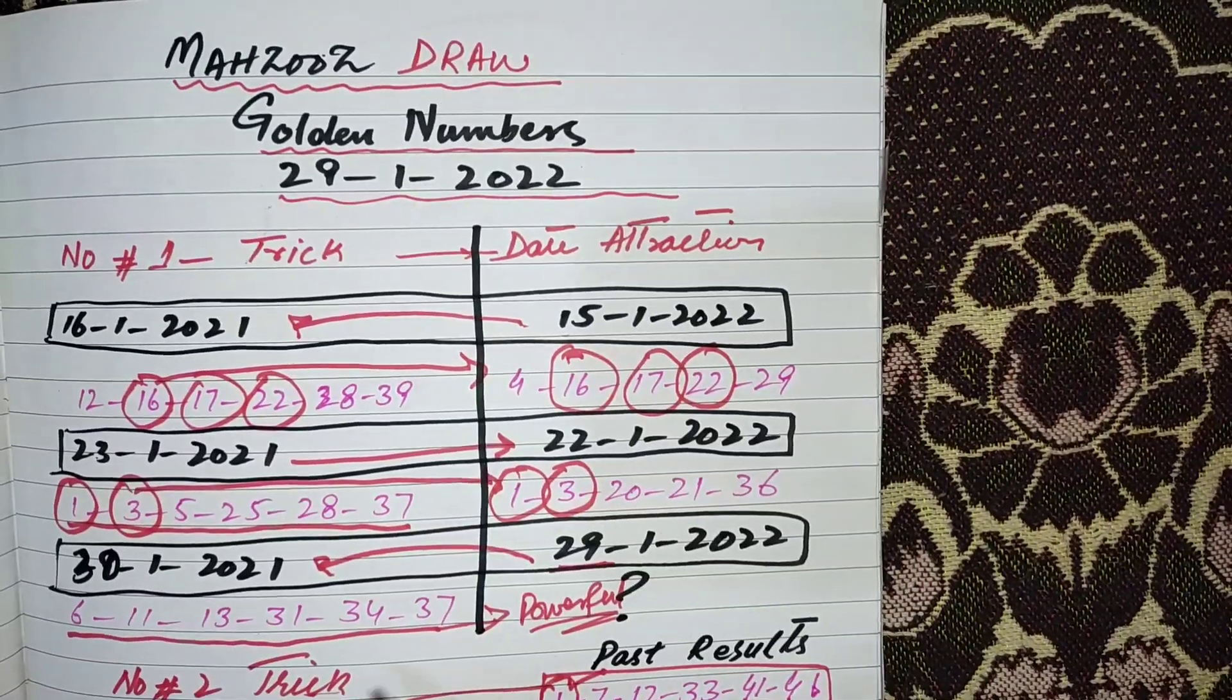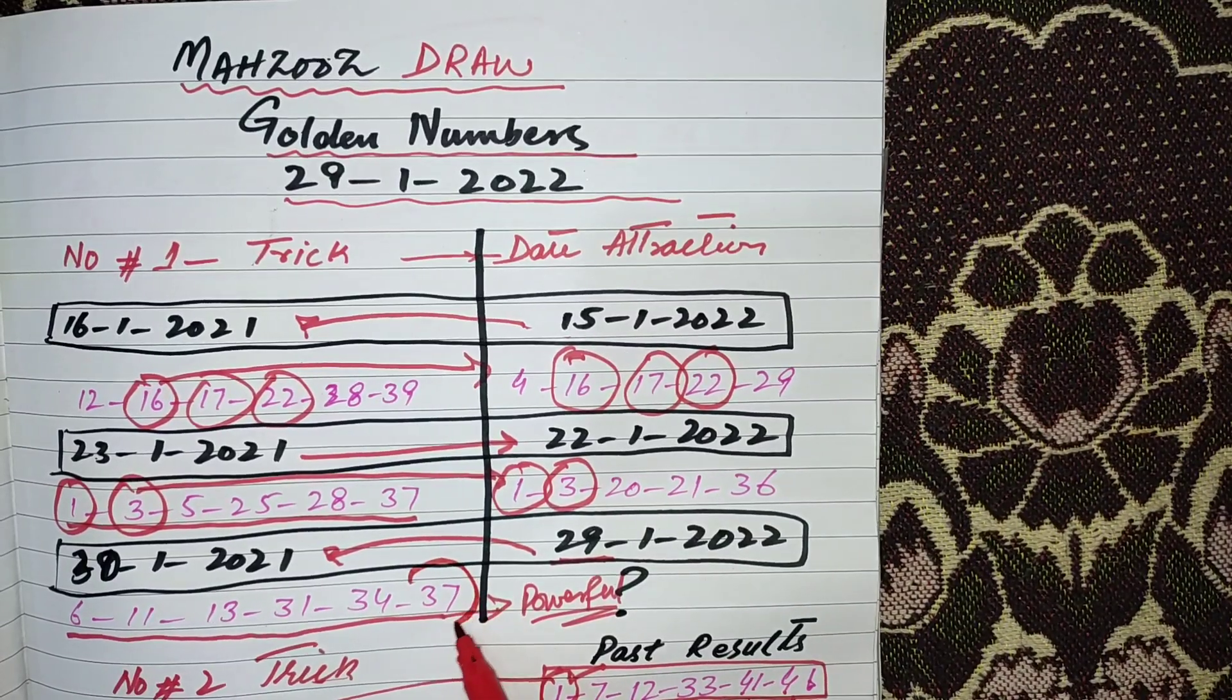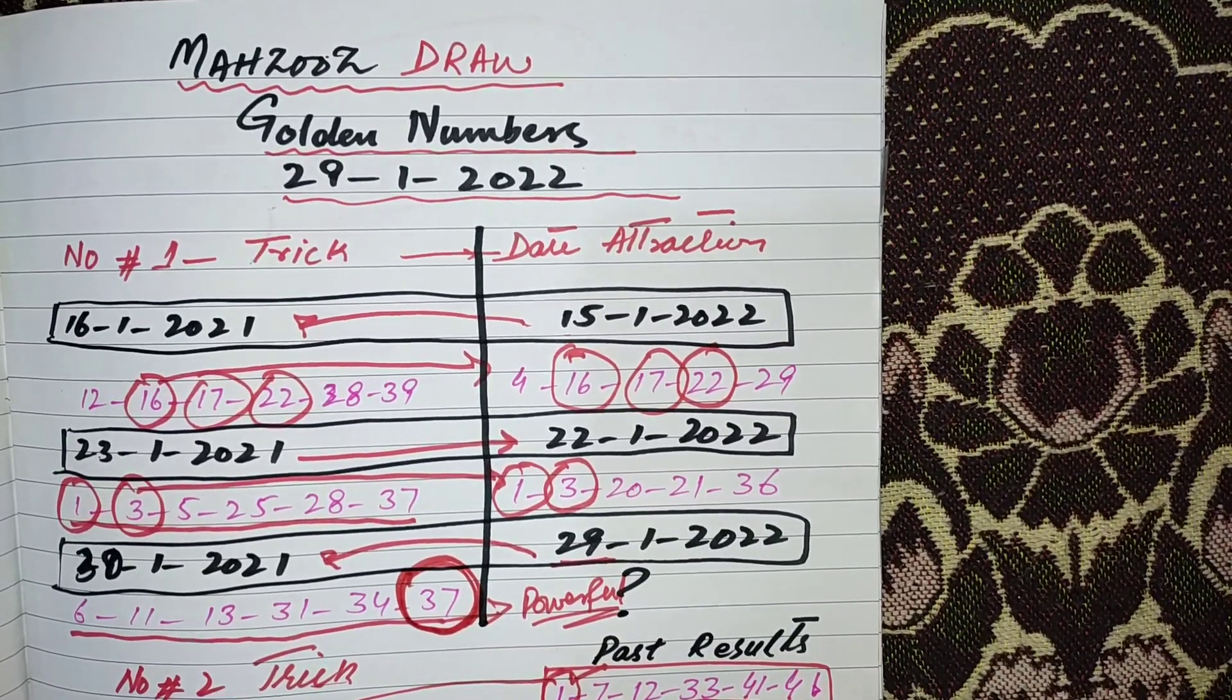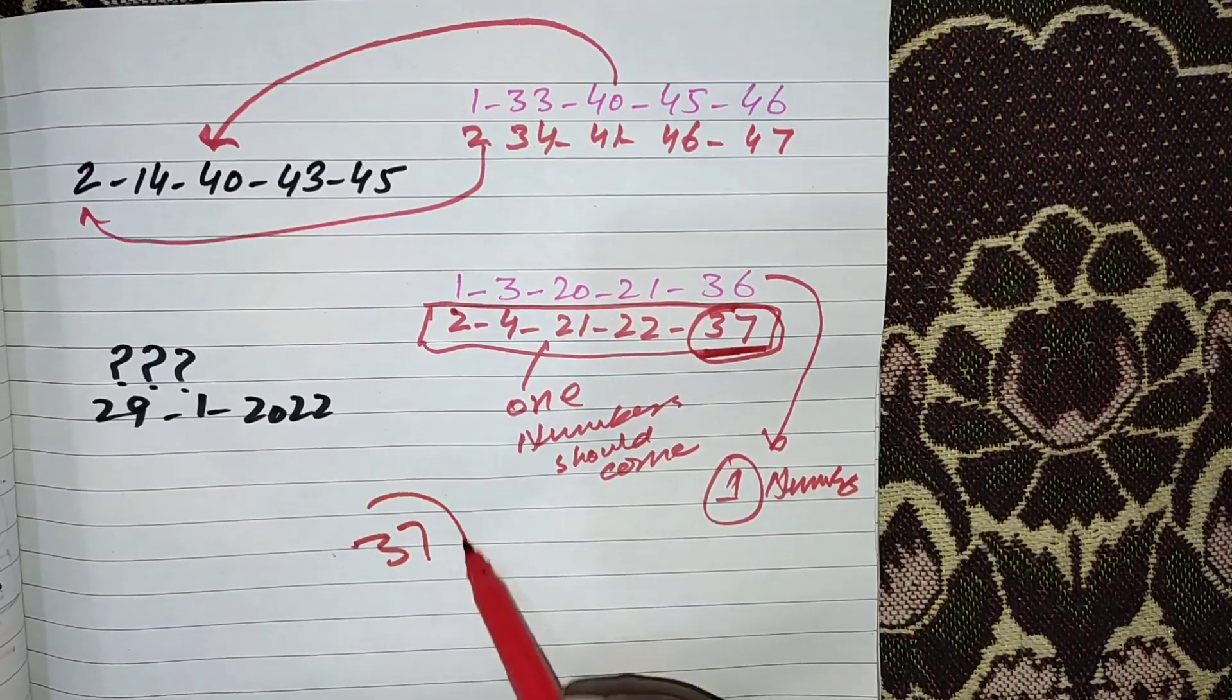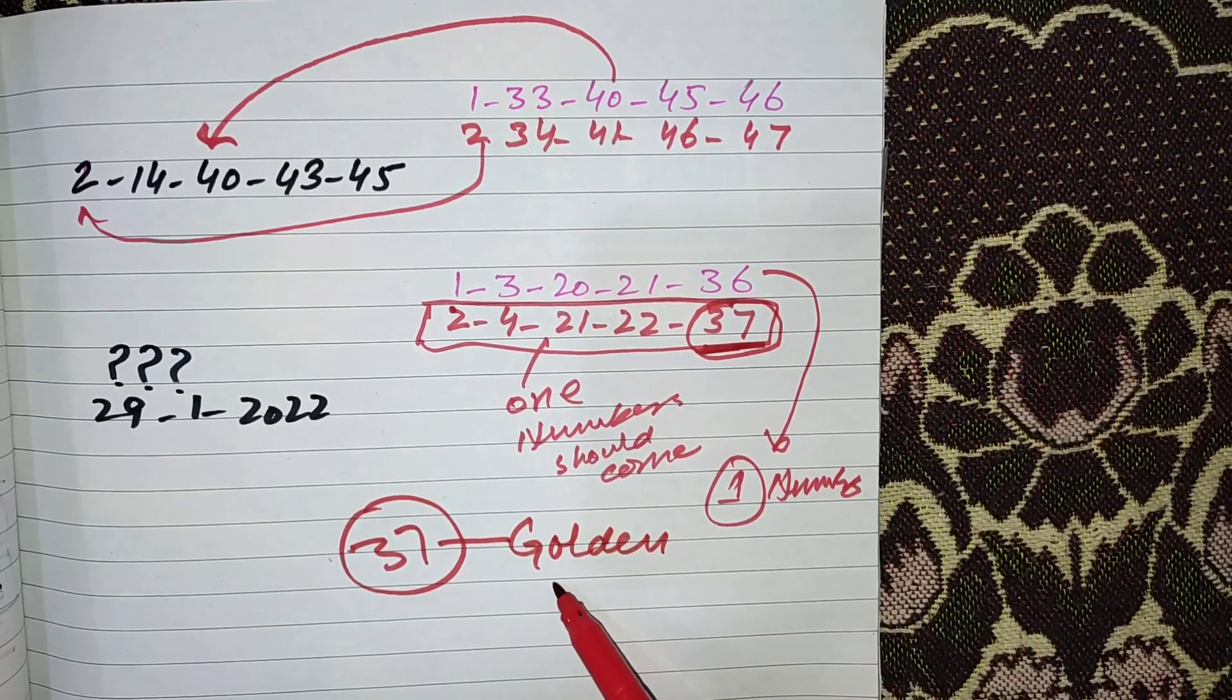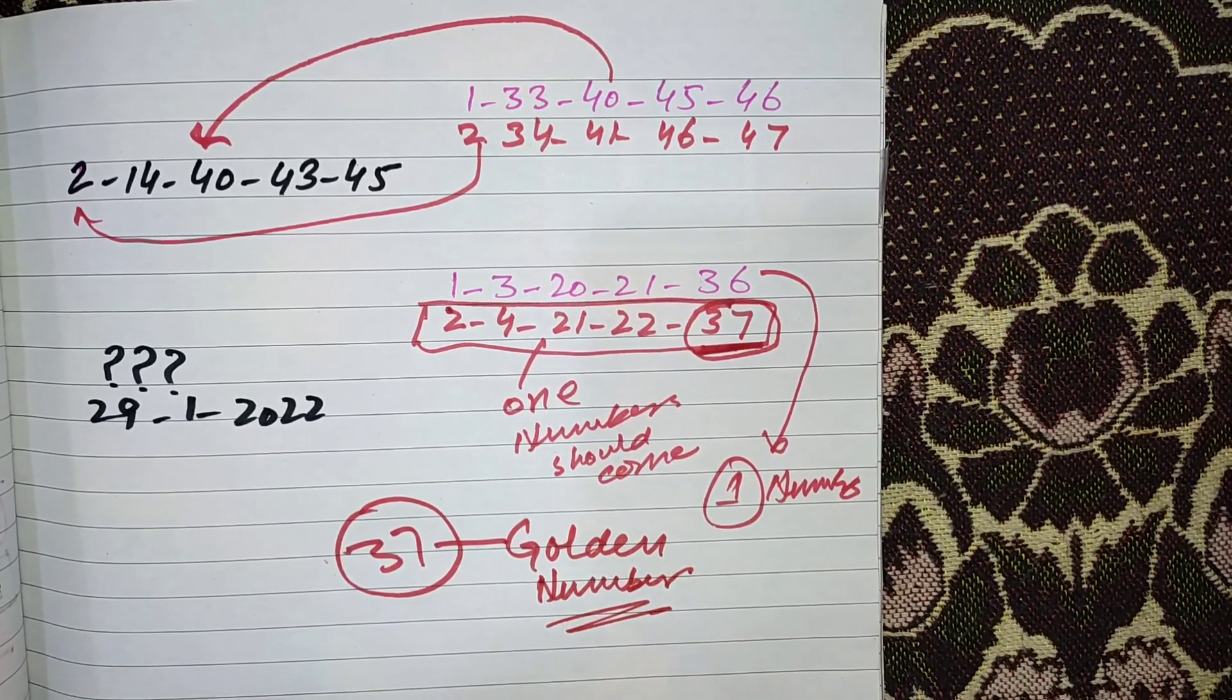In our previous routine, this is date attraction routine, you can see it is also here the 37 number. So the 37 number is golden number for the upcoming draw of Mezus.